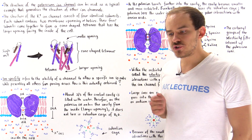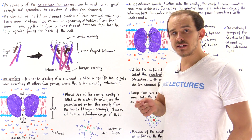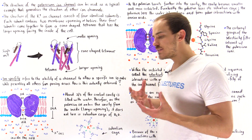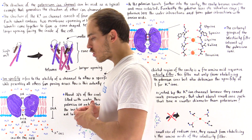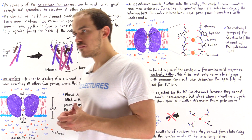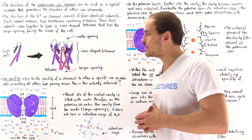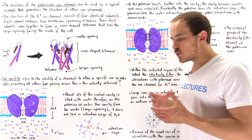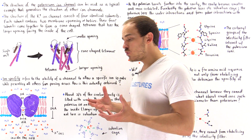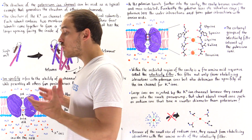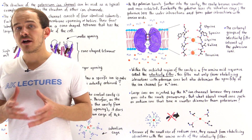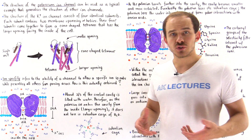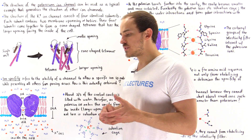Before we discuss voltage-gated and ligand-gated ion channels, let's focus on the structure of an ion channel. To generalize, we're going to focus on a specific type known as the potassium ion channel. The potassium ion channel allows the movement of potassium ions across the membrane down their electrochemical gradient, from a high electrochemical potential to a low electrochemical potential.